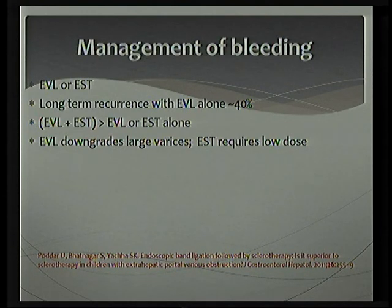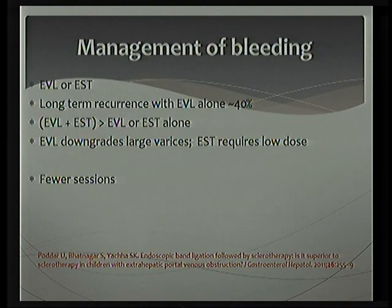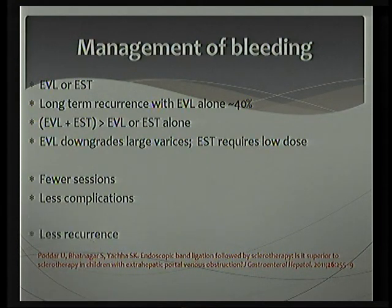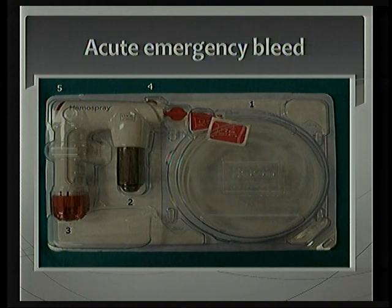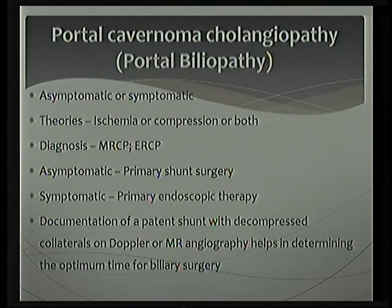EVL — variceal ligation — has scored better over sclerotherapy, but studies are now showing that a combination of variceal ligation with sclerotherapy is better than either alone. Variceal ligation takes care of larger varices, reducing the dose of sclerotherapy required so that sclerotherapy-associated complications are minimized. These children require fewer sessions, have fewer complications, and lower recurrence rates. In an acute emergency bleed with no access to a variceal ligator — or in young children where passing a band ligator across a narrow cricopharynx is difficult — a topical hemostat spray can help with acute bleed control.